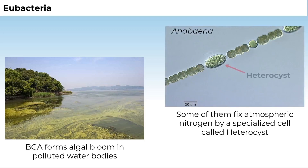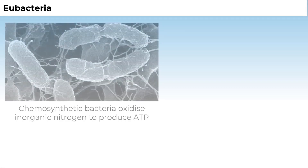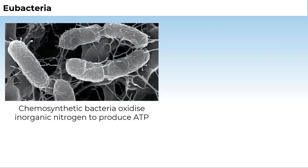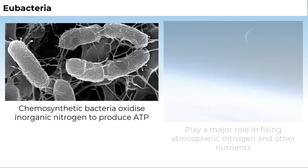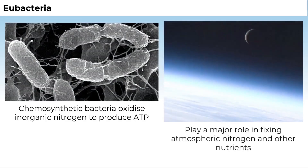Some of these organisms can fix atmospheric nitrogen in specialized cells called heterocysts. Examples are Nostoc and Anabaena. Chemosynthetic autotrophic bacteria oxidize various inorganic substances such as nitrates, nitrites, and ammonia, and use the released energy for their ATP production. They play a great role in recycling nutrients like nitrogen, phosphorus, iron, and sulfur.